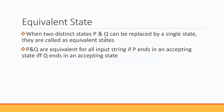If two states P and Q are said to be equivalent, and if P and Q can be replaced by a single state, they are called equivalent states. When two distinct states P and Q can be replaced by a single state, they are called equivalent states. P and Q are equivalent for all input strings if P ends in an accepting state if and only if Q ends in an accepting state. That means for the same input, if P reaches an accepting state, then Q also reaches an accepting state.